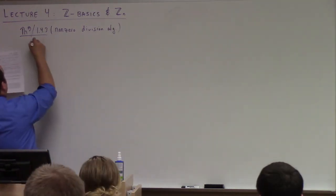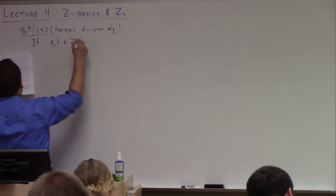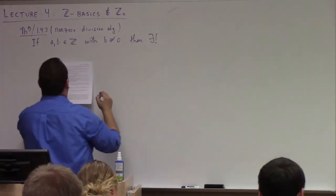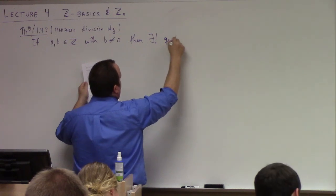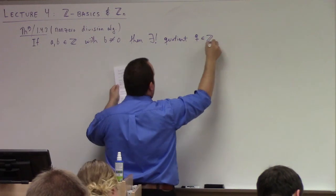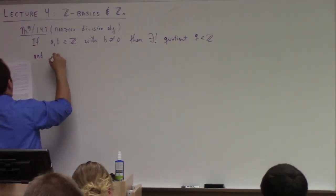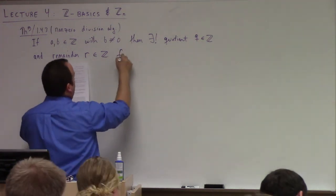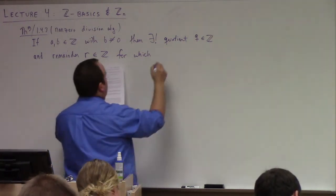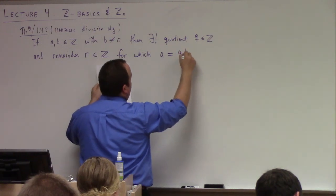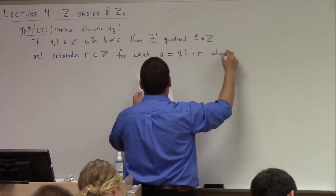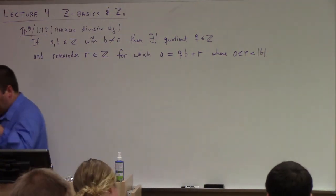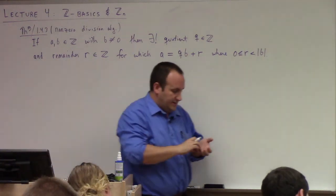Basically, here's the deal. If we have a and b in the integers with b not equal to 0, then there exists a unique quotient q in the integers and remainder r in ℤ for which a is equal to q times b plus r, where we have 0 less than or equal to r less than the absolute value of b. So this is the non-zero division algorithm.